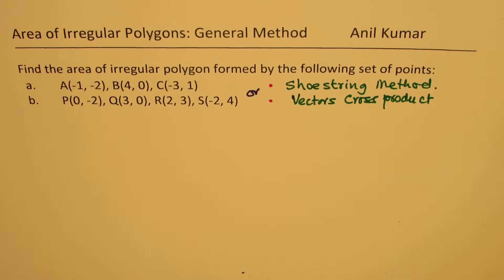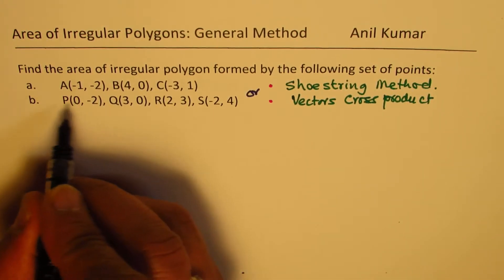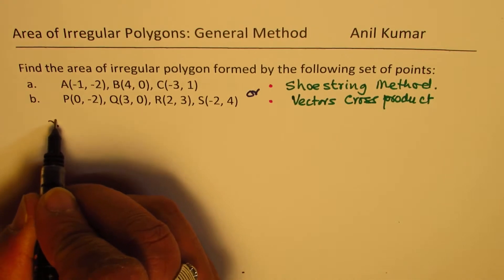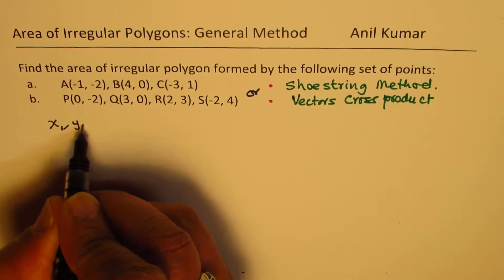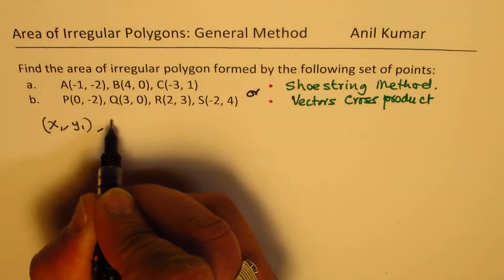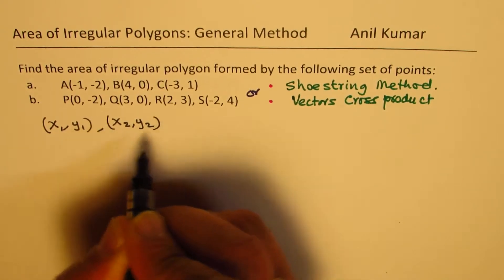Basically, the idea here is that if I have number of vertices, generally if I have x1, y1 as one coordinate point, x2, y2 as the second one.